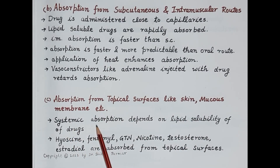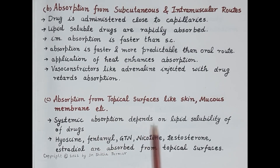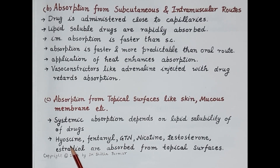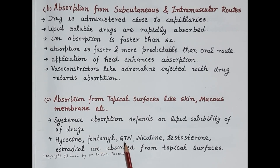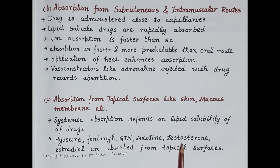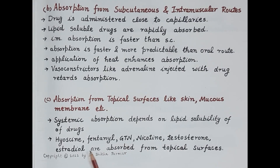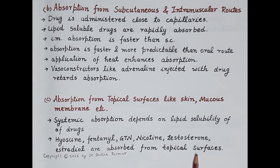For absorption from topical surfaces like skin and mucous membranes, systemic absorption depends on the lipid solubility of the drug — greater lipid solubility means greater absorption. Drugs like hyoscine, fentanyl, glyceryl trinitrate, nicotine, testosterone, and estradiol are all lipid-soluble and are absorbed from topical surfaces. This concludes the overview of absorption and factors affecting absorption of drug. If you find the video useful, kindly like, subscribe, and share.